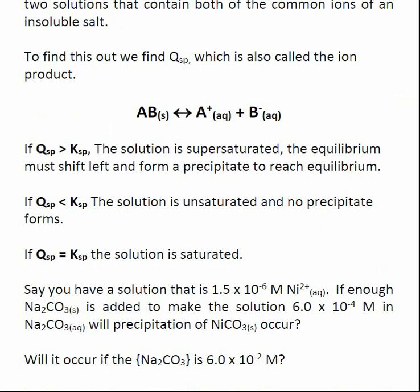If Qsp or our ion product is greater than Ksp, it means our solution is supersaturated. By Le Chatelier's principle, this means that our equilibrium is going to have to shift to the left for us to reach equilibrium. When we do this, it means that we are going to form a precipitate.